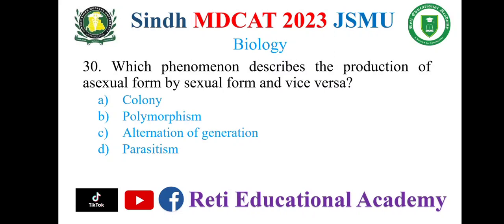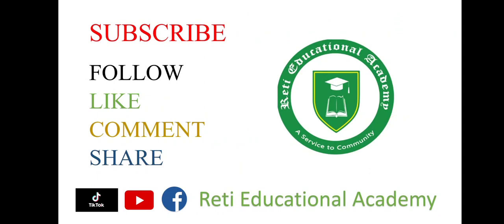Which phenomenon describes the production of asexual from sexual form and vice versa? A. Colony, B. Polymorphism, C. Alternation of generation, D. Parasitism. The correct option is C. Alternation of generation. Subscribe to the Educational Academy YouTube channel and follow us on TikTok and Facebook.